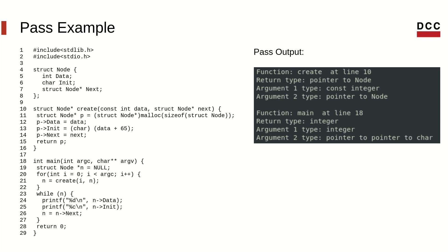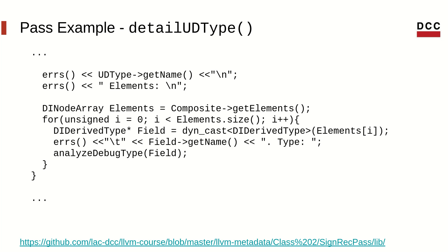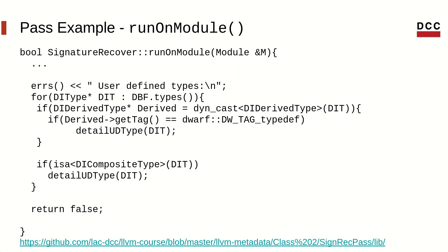We can see that there is a user-defined type called node in this program, but the output doesn't give us more information about this type. So let's add a bonus function in our pass to detail the user-defined types using metadata. We identify debug types based on the dwarf tag as before. When we find a composite type, we can detail each one of its elements — that is, the types that compose it. Each type is a derived type that represents a field in a composite type. We can get the name of the field and analyze its type using the function we already defined. We also deal with the typedef keyword to redefine types. In our main method, we use the DebugInfoFinder to access every type found in the module, and if we find a user-defined type, we can now detail it.